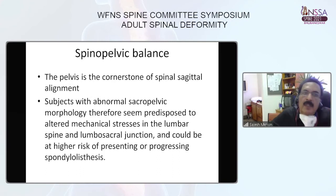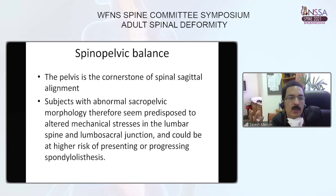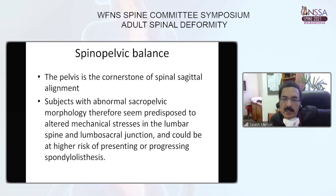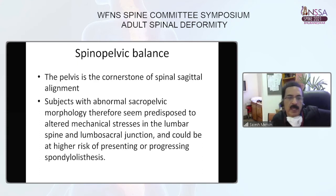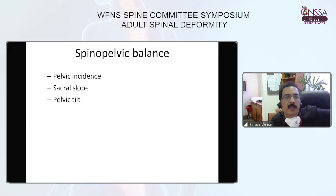The pelvis is the cornerstone of spinal alignment. Abnormal sacral-pelvic morphology can predispose to altered mechanical stress in the lumbar spine and lumbosacral junction, and could put a patient at higher risk of presenting or progressing spondylolisthesis.